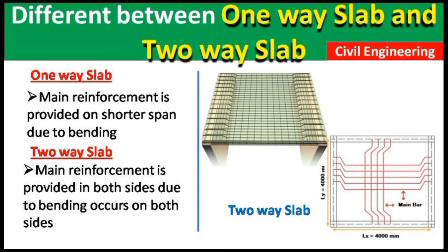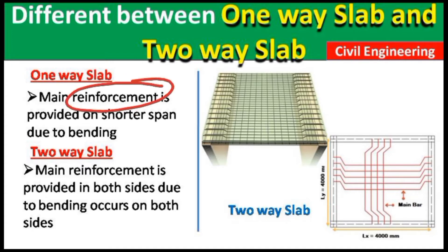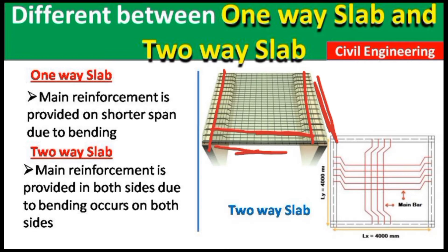The next difference: in a one-way slab, the main reinforcement — that is, the main steel bars — is provided along the shorter span due to bending. You can see here one beam is on this side and one beam on the other side. This is the shorter span and this is the longer span. Main steel bars are provided in the shorter span, and distribution steel bars are provided along the longer span.